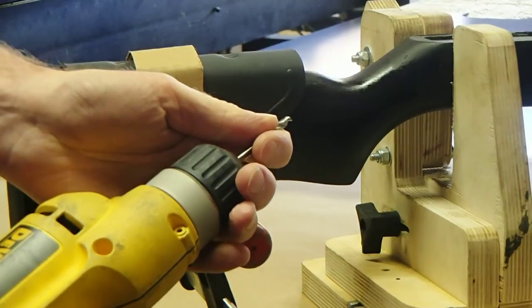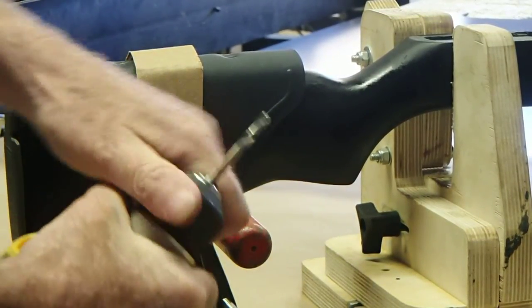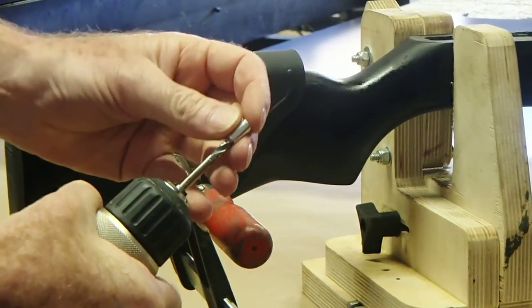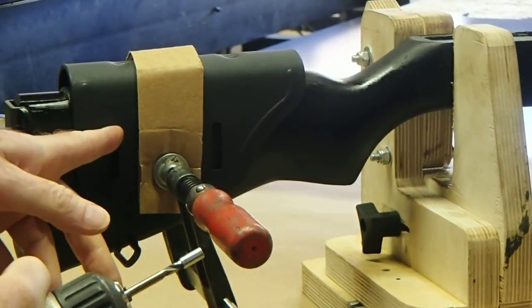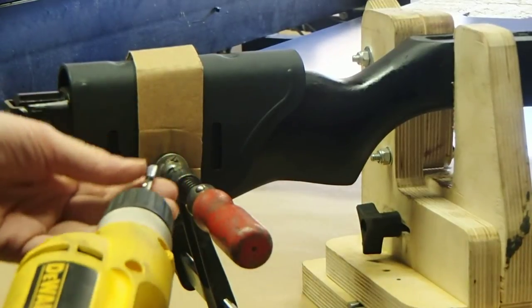Next, insert the three-sixteenths drill bit in your drill and place the drill bushing on the tip of the drill bit like this. The drill bushing goes right against the top inside edge of each slot to keep the drill bit centered.